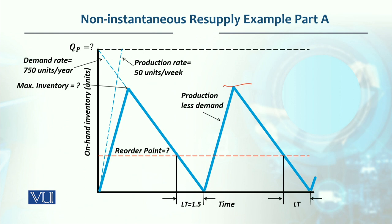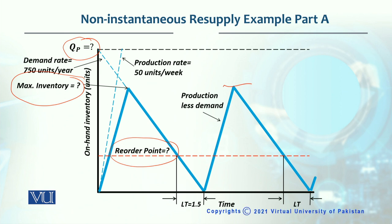What we need is to find the order quantity, the maximum inventory, and our reorder point, which will drive this policy. When inventory reaches the reorder level, we place the order quantity for production, inventory builds up, and we achieve the maximum inventory level.